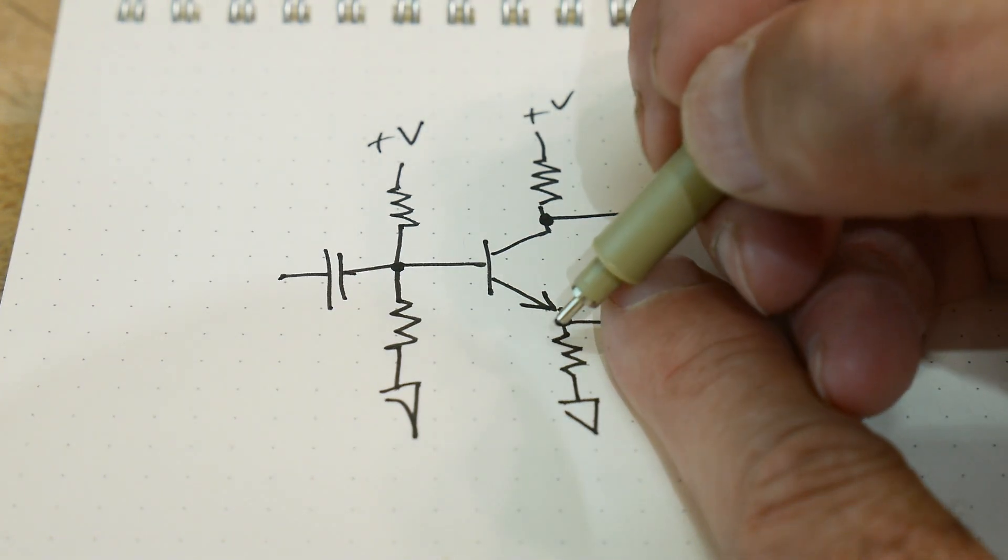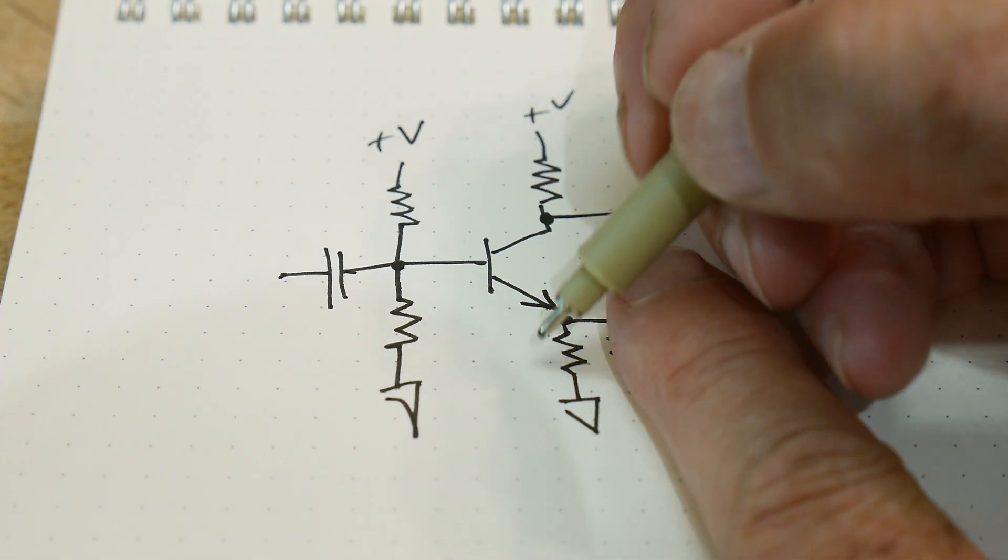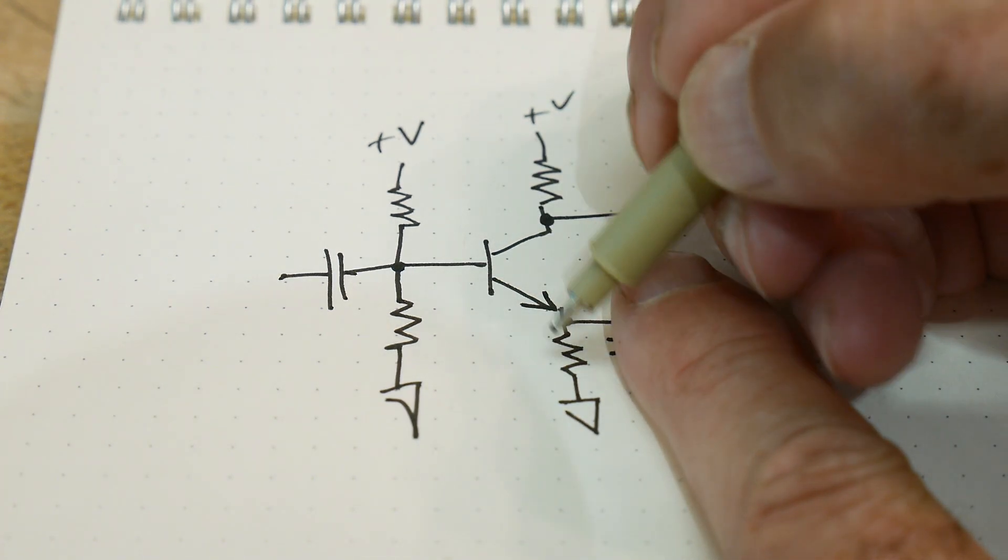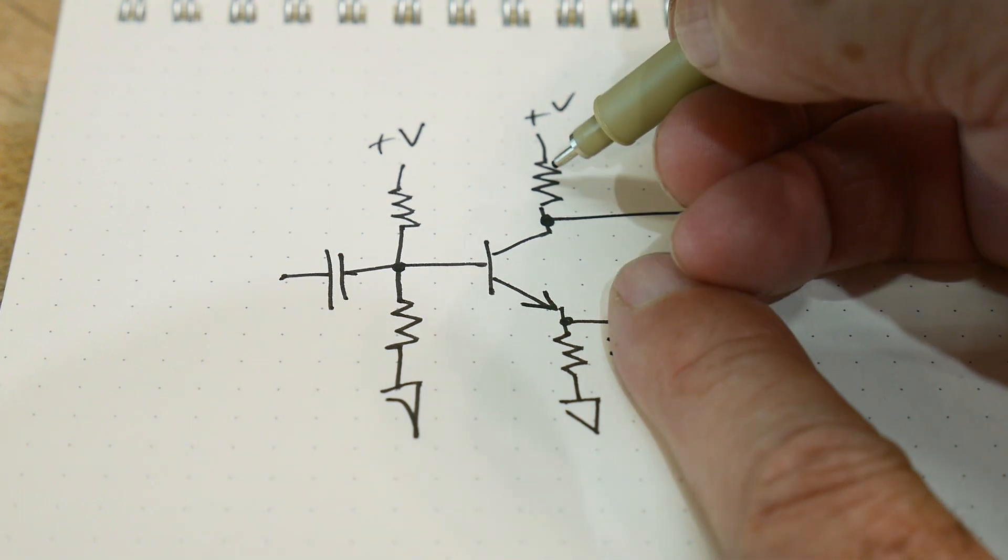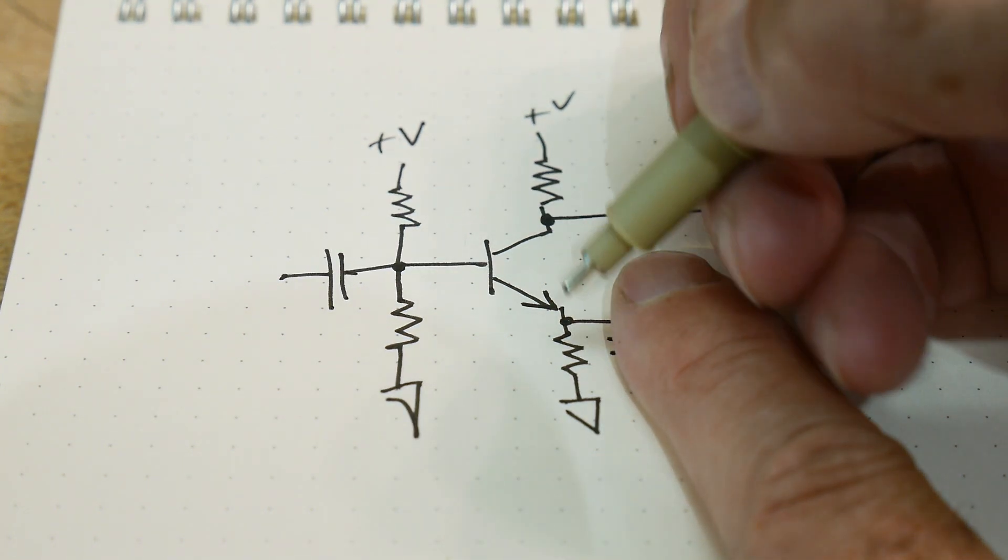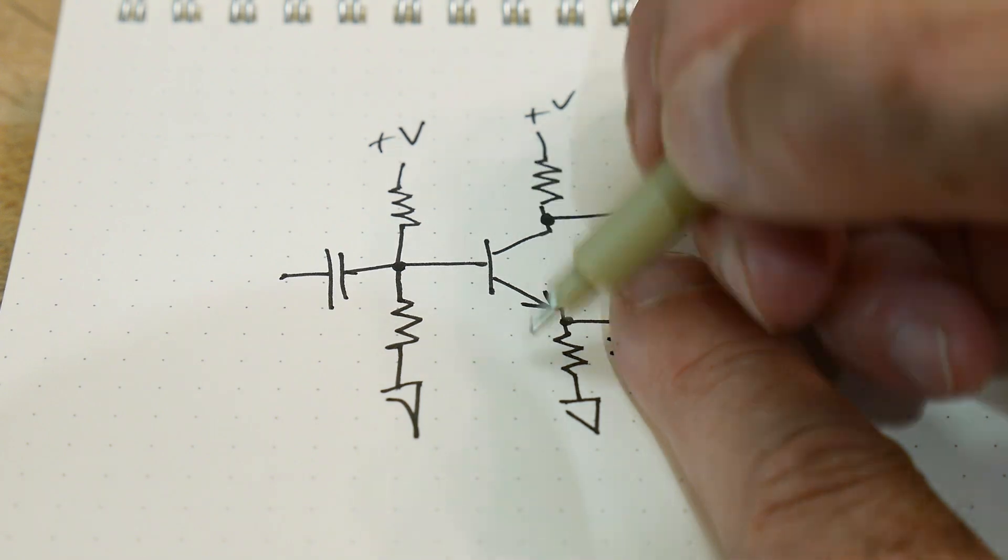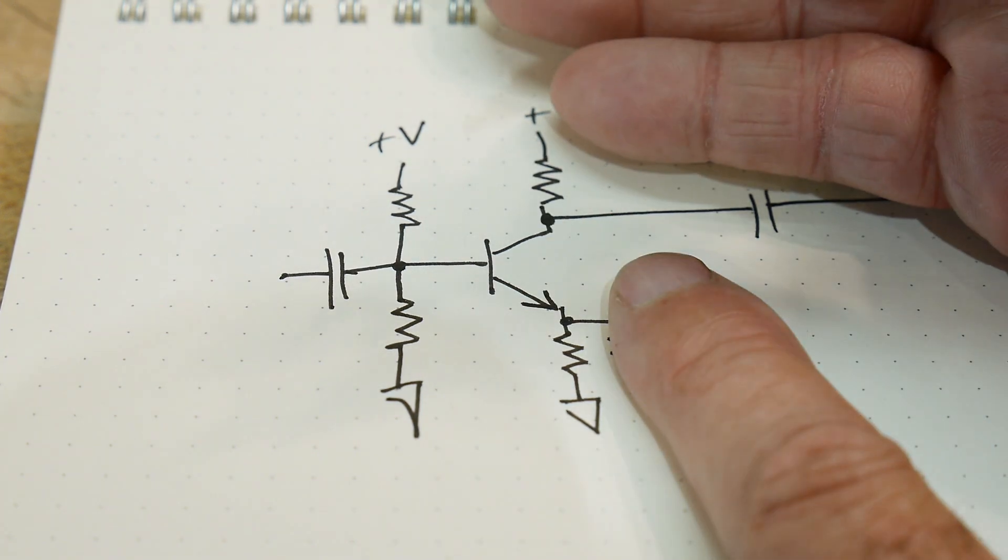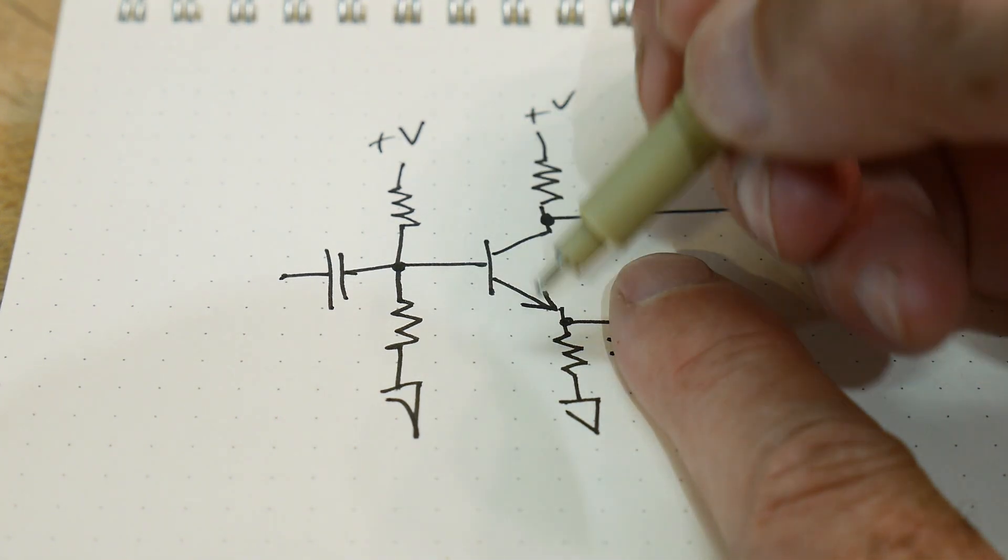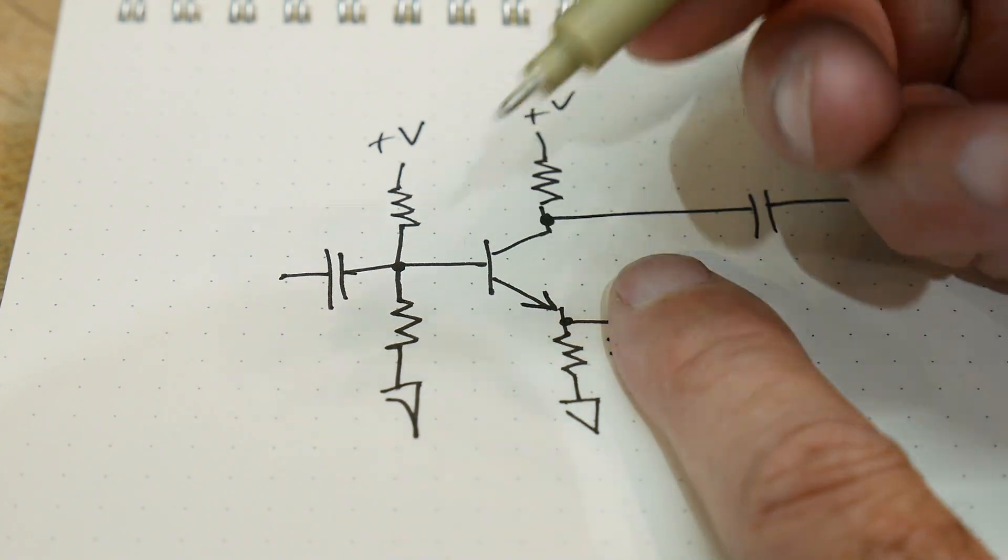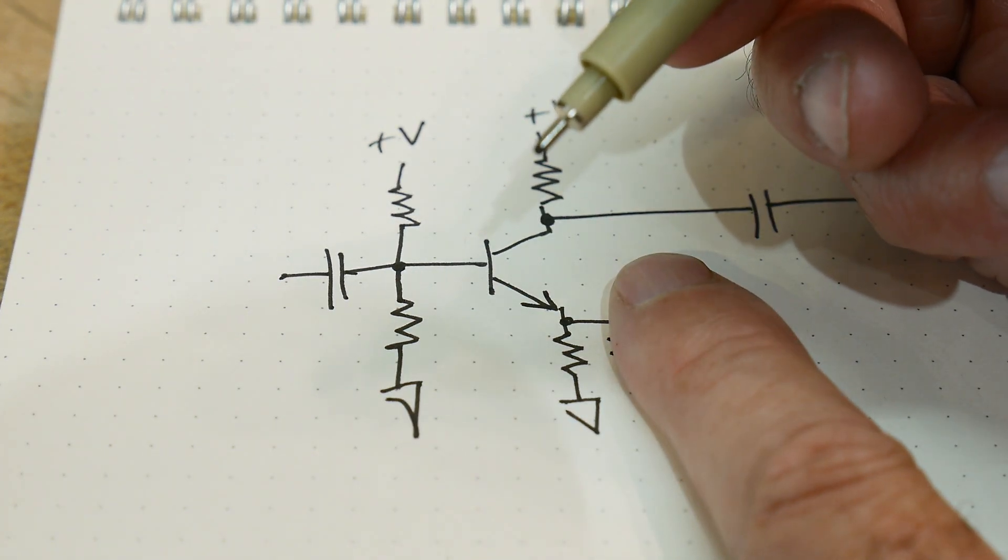The problem with adding this resistor is now that some of the current flowing here will create a voltage down here. And that voltage will subtract from this voltage. And so you won't get as much gain. The gain is kind of roughly like a ballpark seat of the pants type thing. It's this resistor over this resistor. So if this is 10k and this is 1k, the very maximum gain you can get out of this thing is 10 to 1. And so it reduces the amount of gain that this stage can have. It helps in a lot of ways, but then it hurts in one way. And that is in gain.